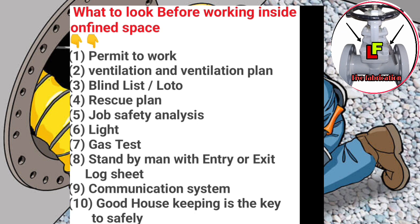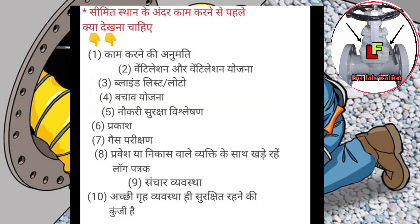Continued safety precautions: 5. Job safety analysis, 6. Lighting, 7. Gas test, 8. Standby man with entry/exit log sheet, 9. Communication system, 10. Good housekeeping is the key to safety.